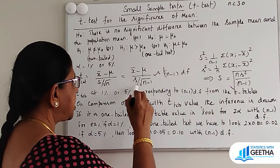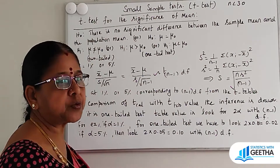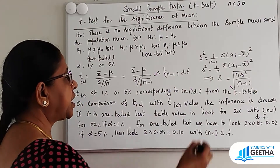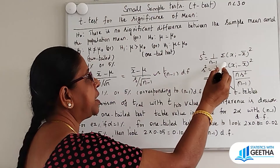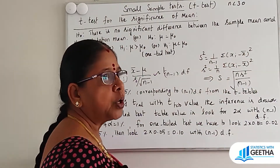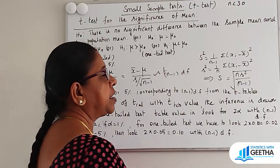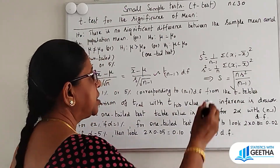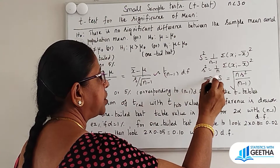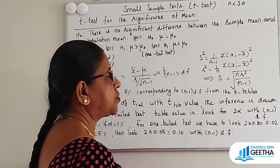This is equivalent to X-bar minus mu by small s by root n minus 1. It follows T with n minus 1 degrees of freedom. Capital S squared is nothing but 1 by N minus 1 summation of (Xi minus X-bar) squared. Small s squared equals 1 by N summation of (Xi minus X-bar) squared.